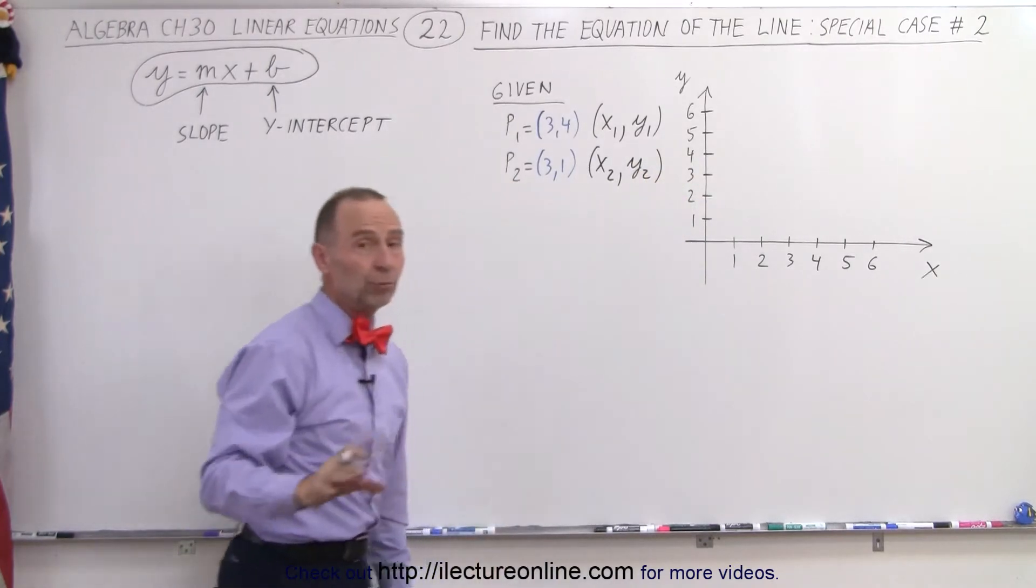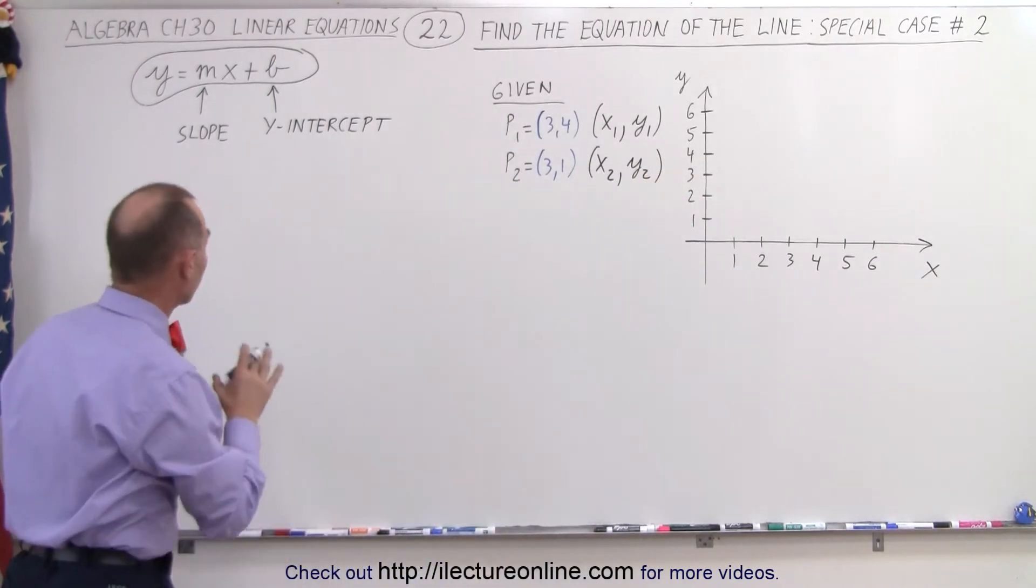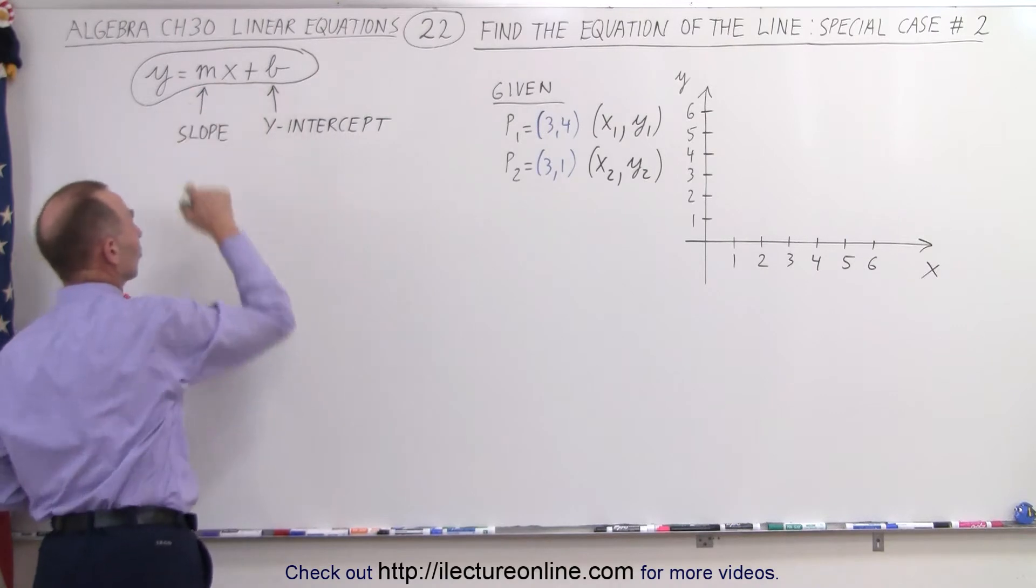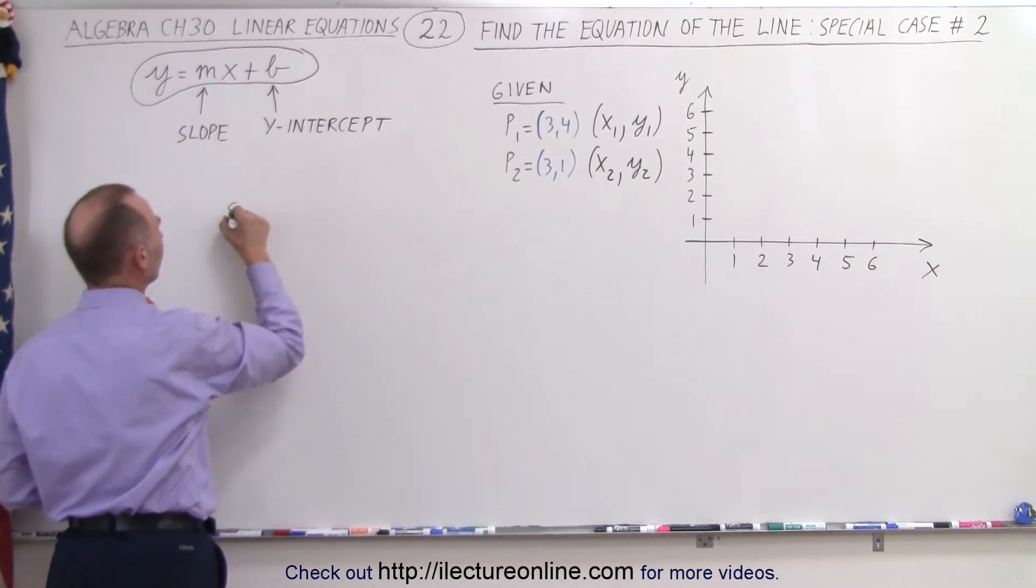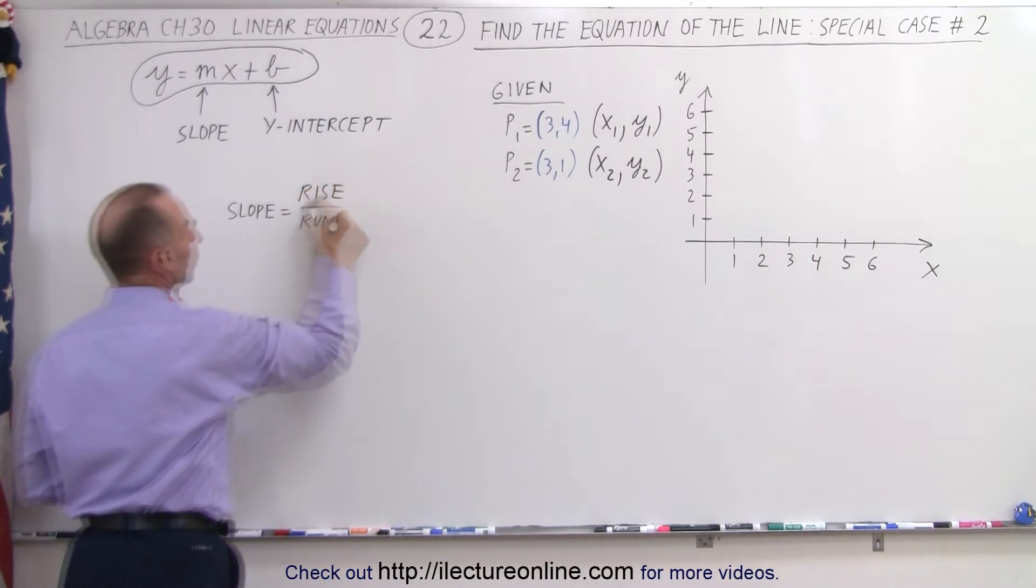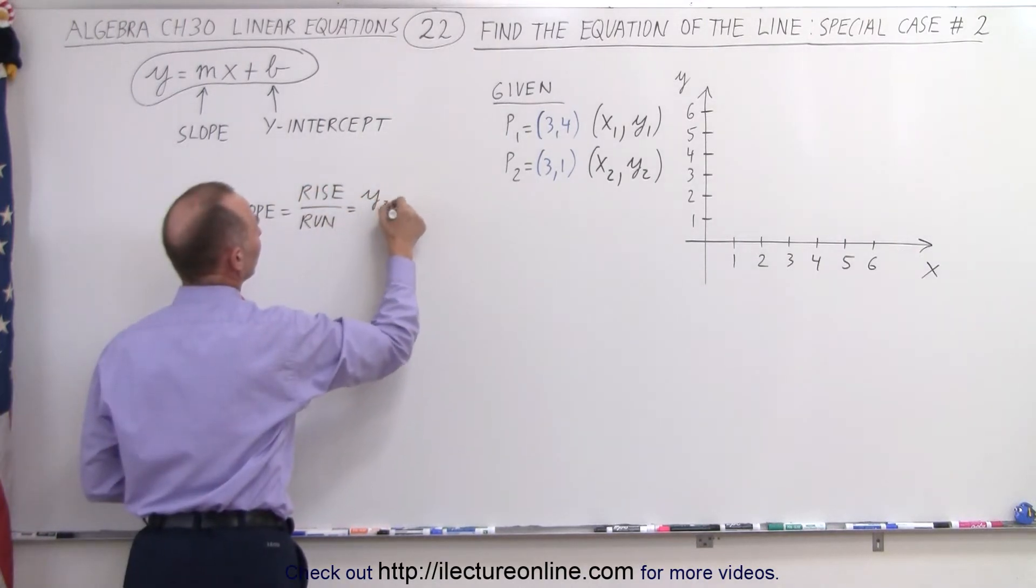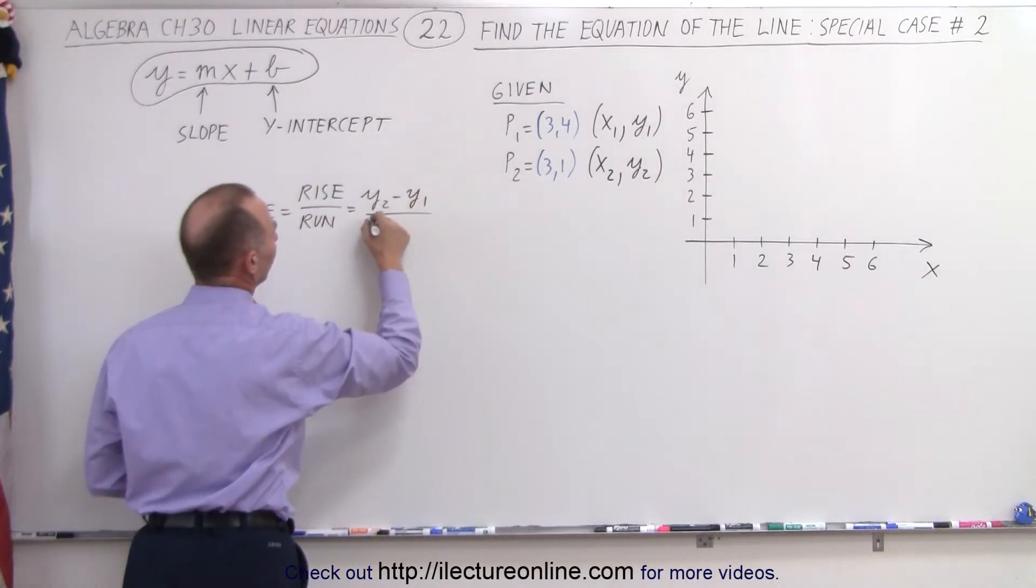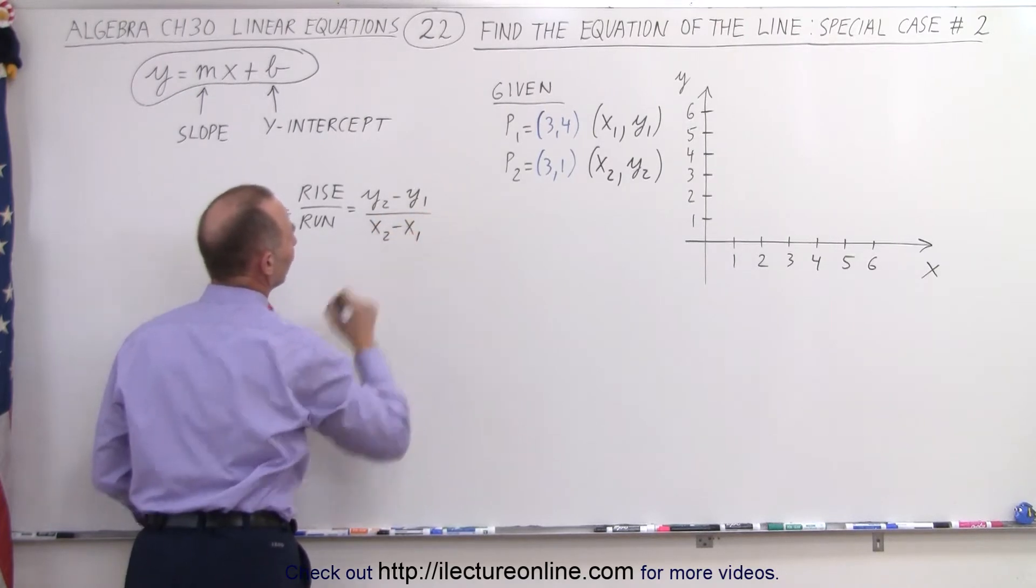And again, since we're given two points, let's try to follow a normal procedure by first trying to find the slope. And by definition, the slope is equal to the ratio of the rise over the run, which is equal to the difference in the y values divided by the difference in the x values.